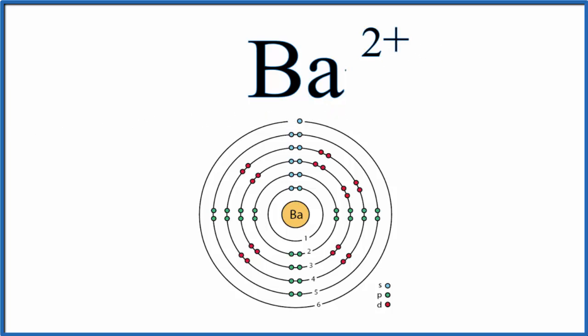So we should get rid of these here in our Bohr diagram as well. And now this energy level here is empty. And this is the Lewis structure for Ba2+, the barium ion. We should put brackets around it though, to show that it's an ion.